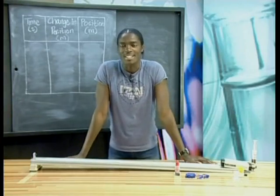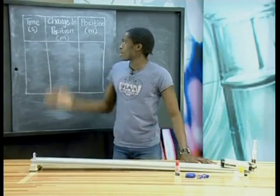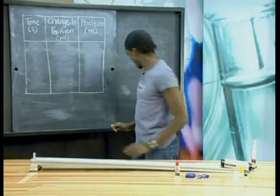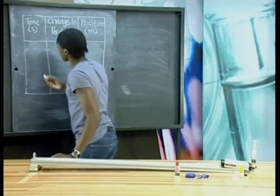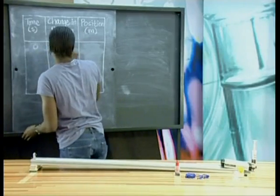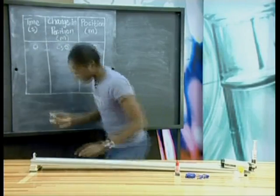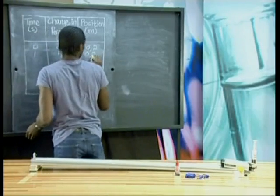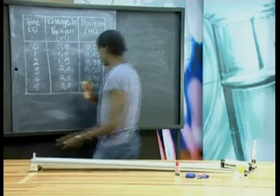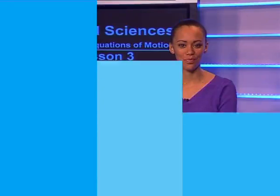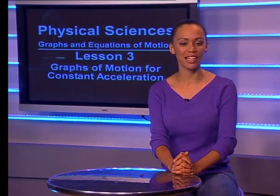Once again, we can build up a table of results of time, position, and displacement. Now let's fill up a table. We can see from Aaron's experiment that the displacement at each time interval increased. Now let's join Nelly so that we can analyze the results from a table.